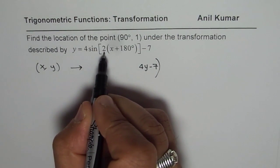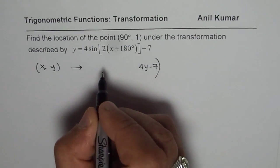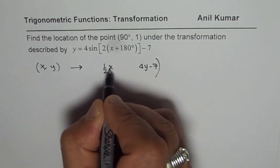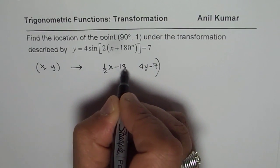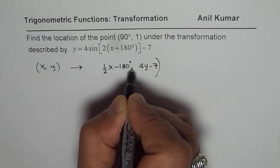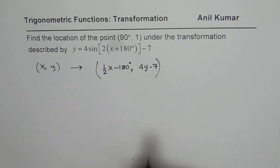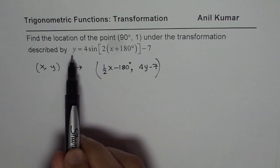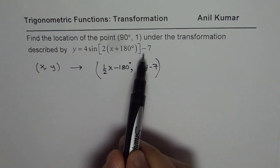As far as the x value is concerned, they will get divided by 2 and then take away 180 degrees. So that is how each and every point on y = sin(x) will get transformed to y = 4sin of this function.